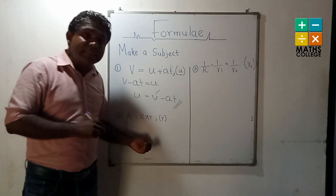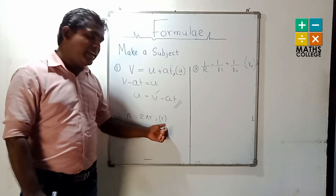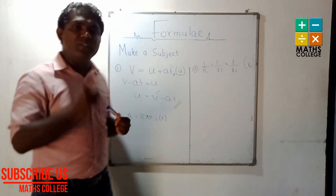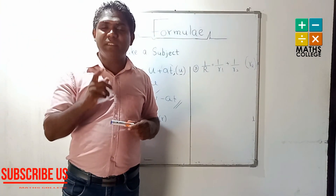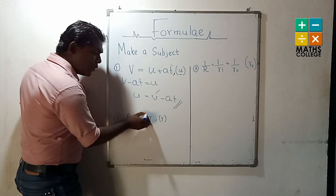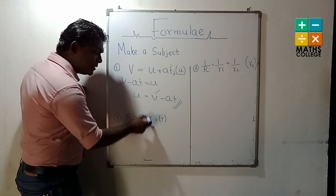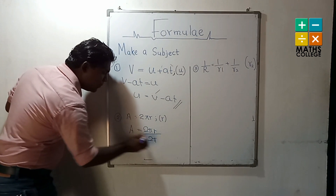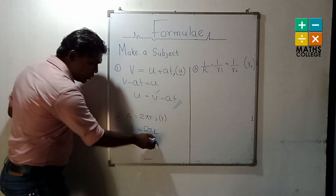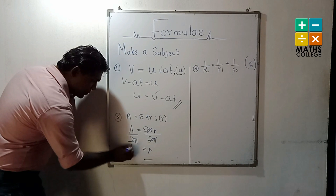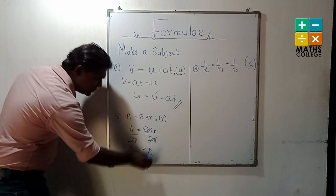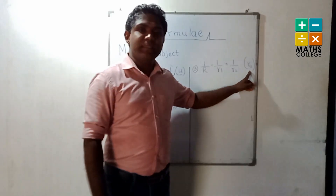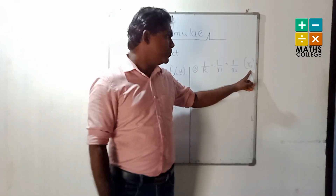In the second example, we have 'r' as the subject. We have 2πr. The opposite operation of multiplication is division. We have to remove 2π from this side because 'r' is the subject. Therefore, we divide both sides by 2π. The 2π cancels, giving us r = a / 2π.